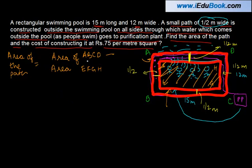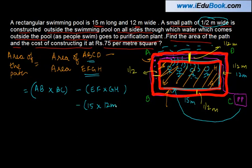Now in so far as area of ABCD is concerned, this can be written as AB into BC. EFGH, which is the smaller one, can be written as area EF into GH. EF, which is this side, we know is 15 meters into GH, which is the breadth of this rectangle, is 12 meters.